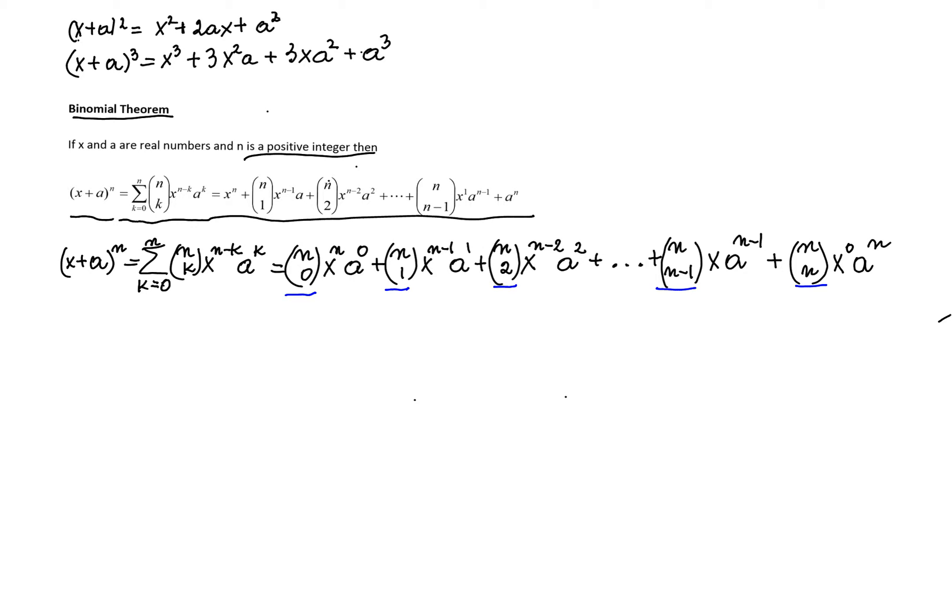Now notice the x. You have x to the power n, x to the power n minus 1, x to the power n minus 2, so you can see that the powers of x are decreasing, finally coming to x to the power 0.